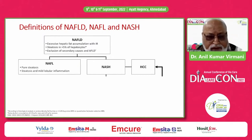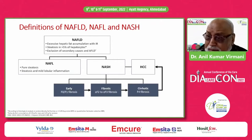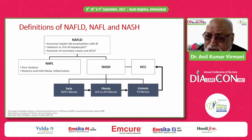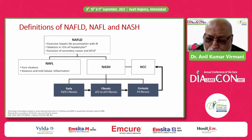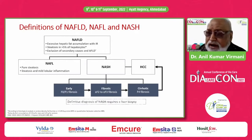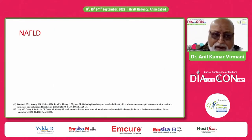NAFLD has been divided into non-alcoholic fatty liver, which is pure steatosis with mild lobular inflammation, and that leads to steatohepatitis. This can be classified according to the fibrosis scoring from early fibrosis F0, F1, fibrotic F2 to F3, and cirrhotic F4, and ultimately can lead to hepatocellular carcinoma. We must remember that the definitive diagnosis of NASH requires a liver biopsy.